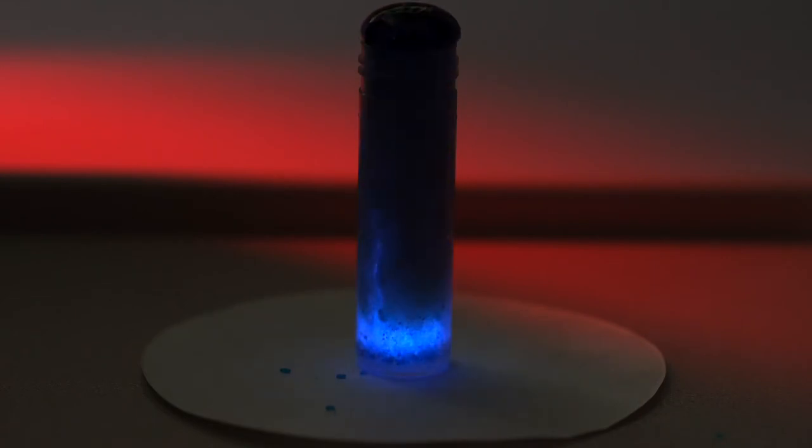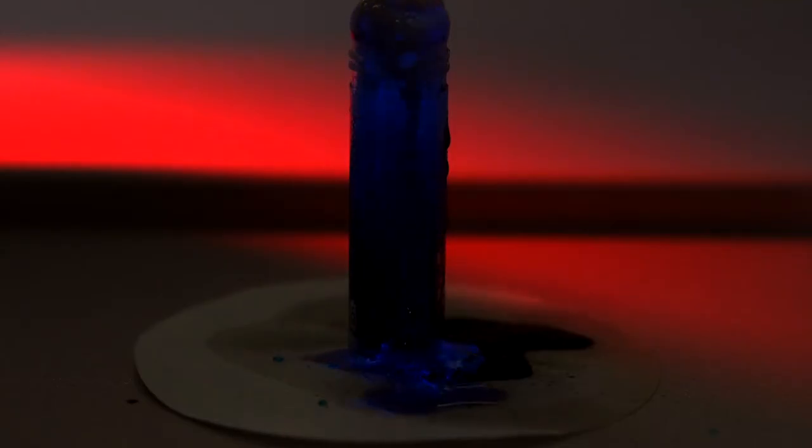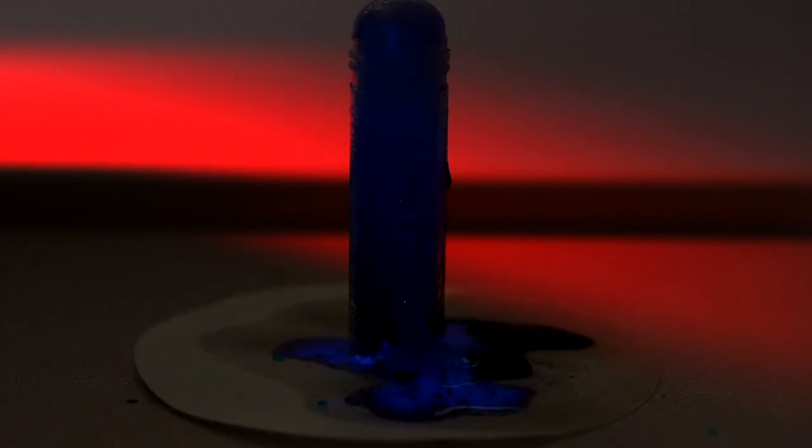Copper sulfate helps hydrogen peroxide oxidize luminol, which causes a blue glow. As the hydrogen peroxide decomposes, it releases oxygen bubbles, causing the mixture to foam. The oxidation of luminol and decomposition of hydrogen peroxide make the glowing volcano erupt.